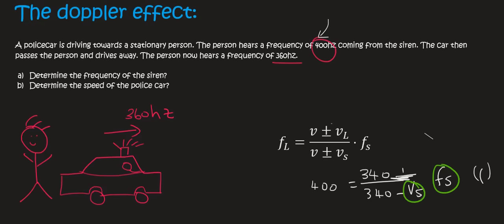So now the car moves away from the person and the frequency that the person hears is 360. So we can say 360 is equal to 340. Now the listener is still not moving, so we're not going to add anything for there. Now we're going to use a plus at the bottom. So it's 340 plus the velocity of the source, which we don't know, and then the frequency of the source, we still don't know.